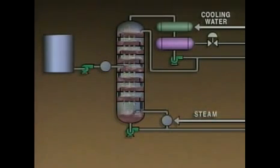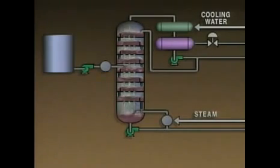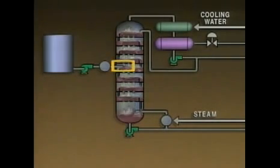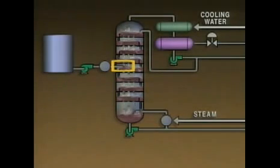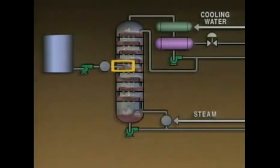Changes in the differential pressure may indicate that a problem exists. For example, an increase in differential pressure could be an indication that the feed rate is too high. Too much feed entering the tower will overload it. If this happens, the differential pressure will increase and the tower will be unable to make the desired separation. In this case, it might be necessary to decrease the feed rate.